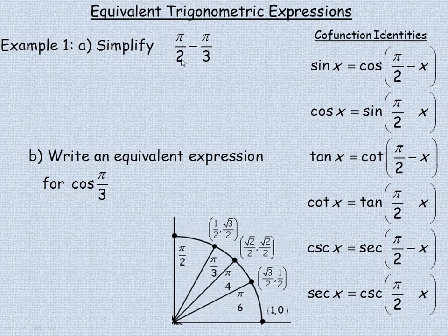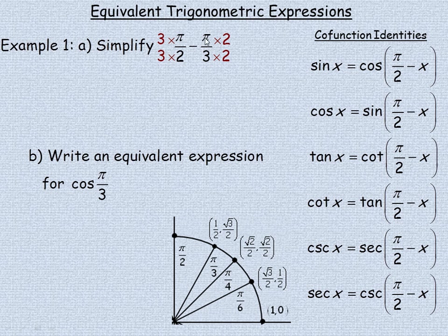In order to subtract these, we need to get a common denominator, which is 6. So we'll multiply pi over 2 by 3 top and bottom, and pi over 3 by 2 top and bottom. Then we get 3 pi over 6 minus 2 pi over 6, which is just pi over 6.